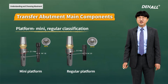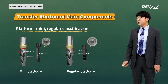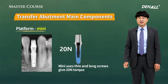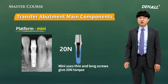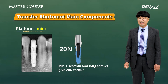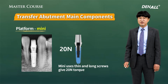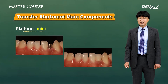Regular platform abutments are used for fixtures with a diameter of 4.0 or above. For mini-platforms, long screws are used with up to 26 Ncm torque according to the manufacturer's instruction. For regular platforms, up to 36 Ncm torque is used according to the manufacturer's instruction.